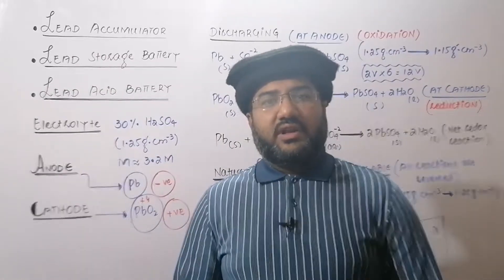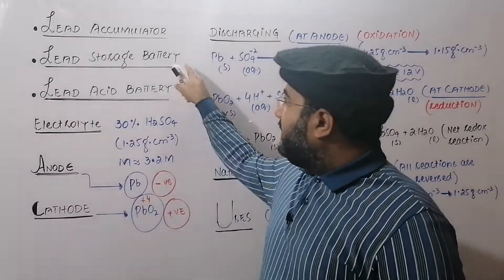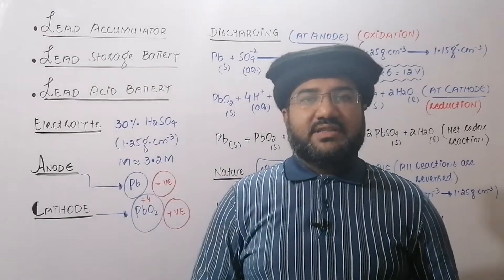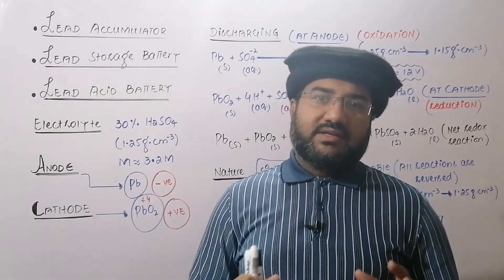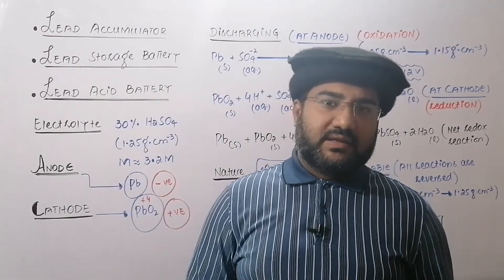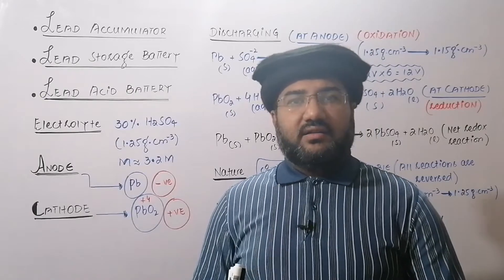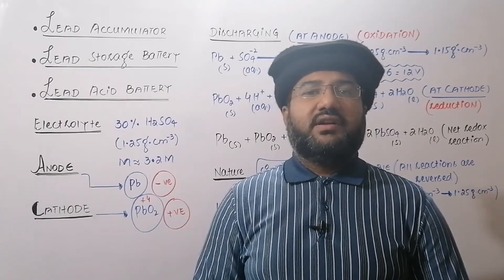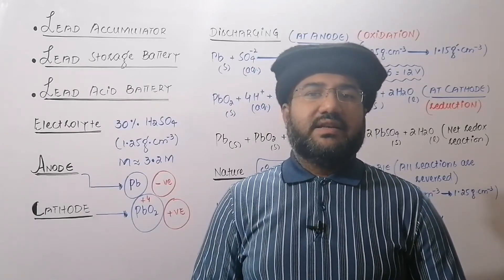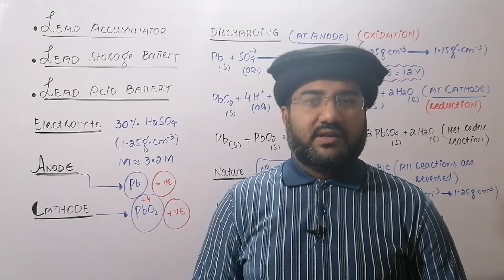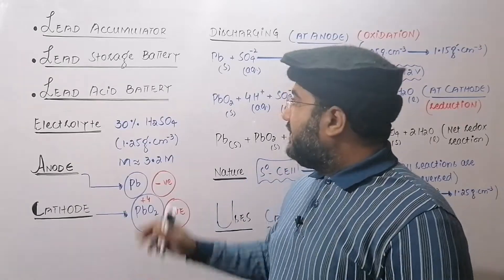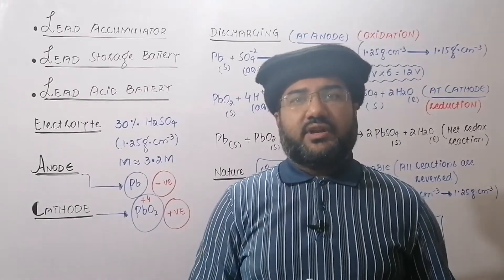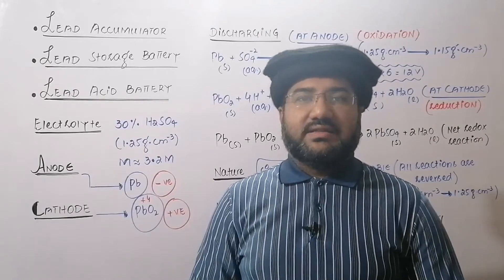First of all, keep in mind that it is a battery. A battery is basically a collection of cells. When two or more than two cells are connected in series, then we get the battery. So a battery is basically galvanic cells which are connected in series.